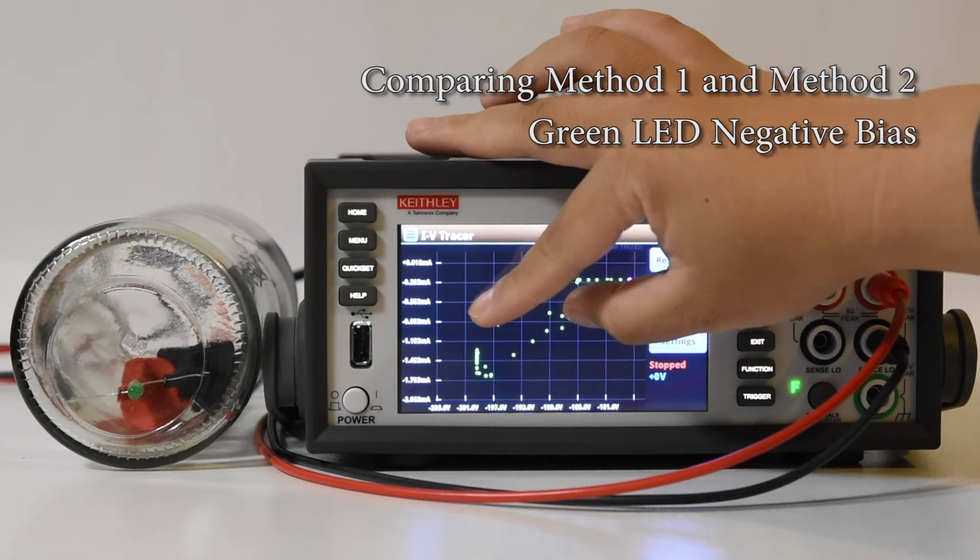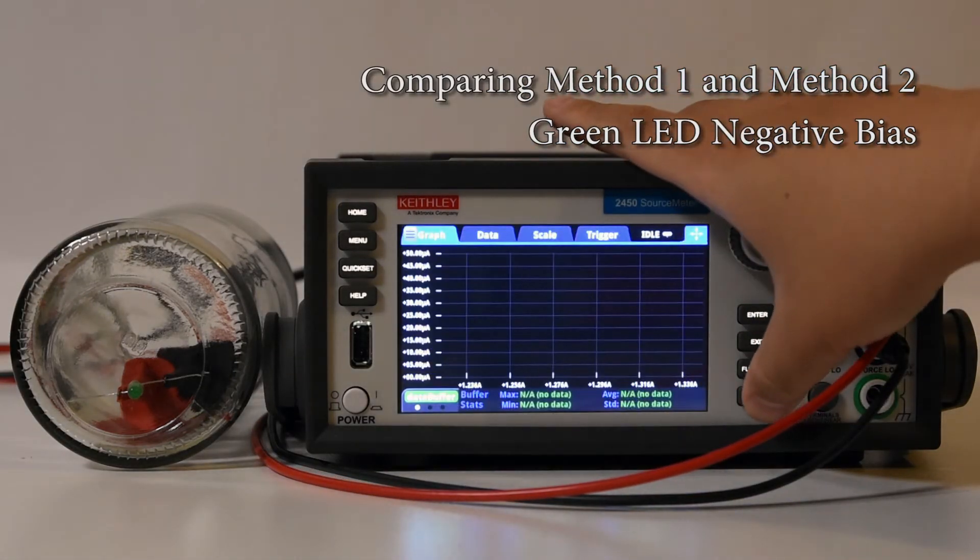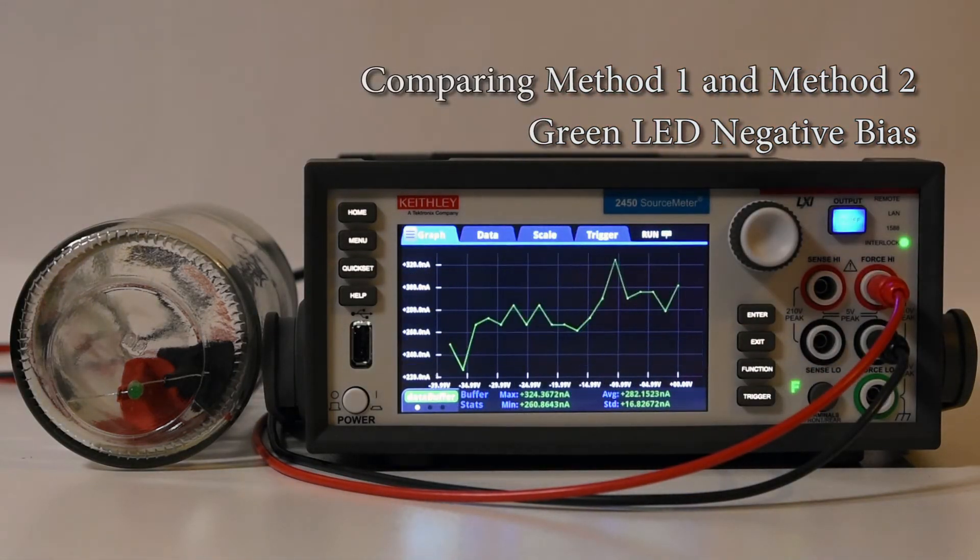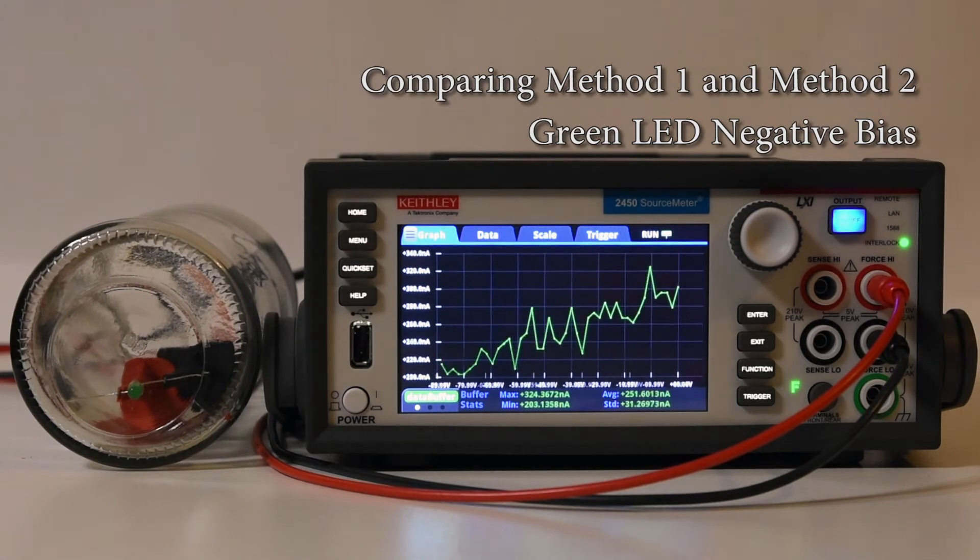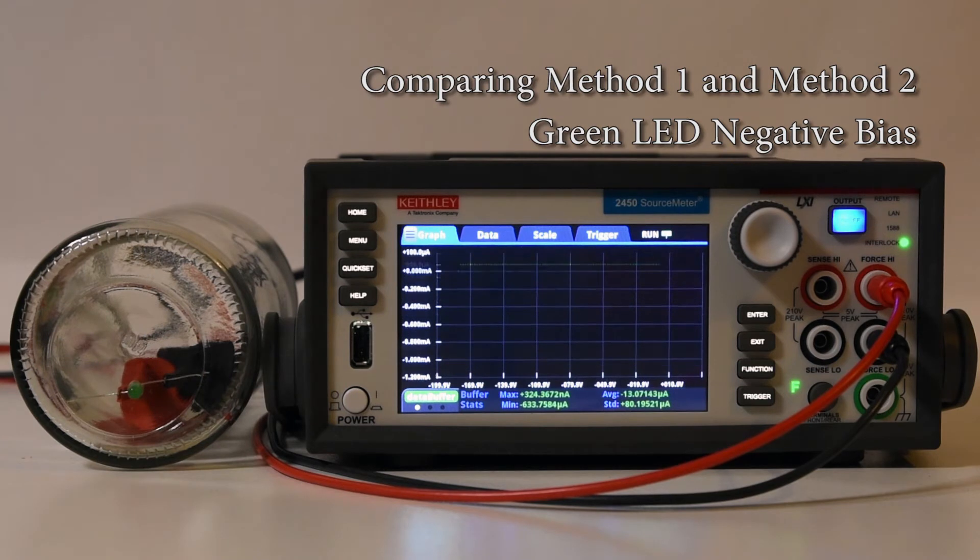The same kind of test can be achieved using the first method. In this case I configured fewer points to make a faster sweep. The results are quite similar, although as the sweep was configured in a single direction, it comes up as just a single line.